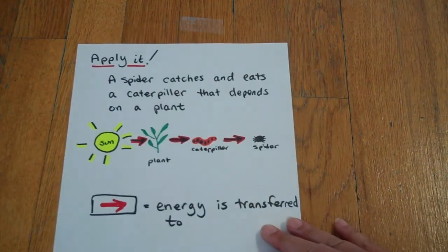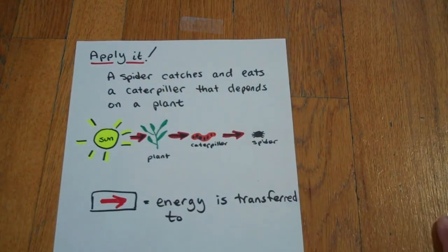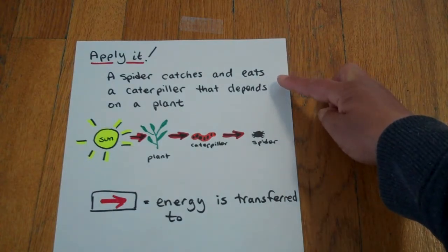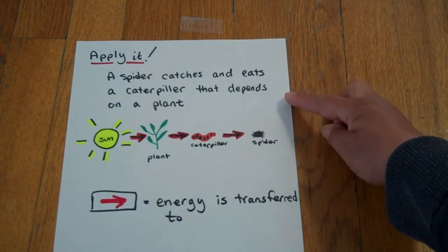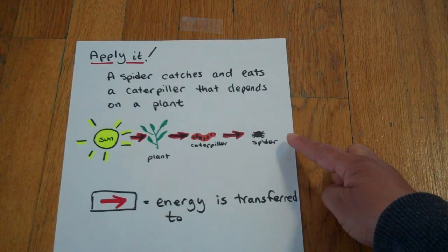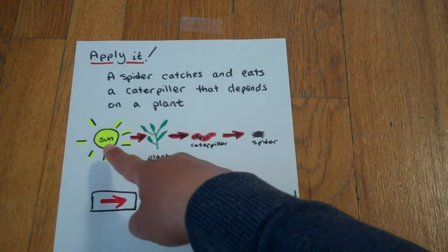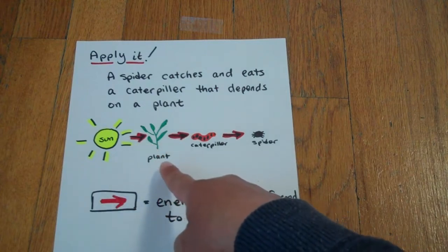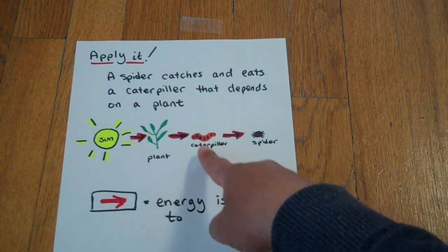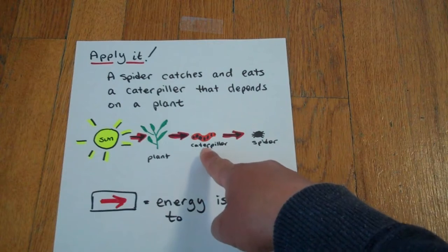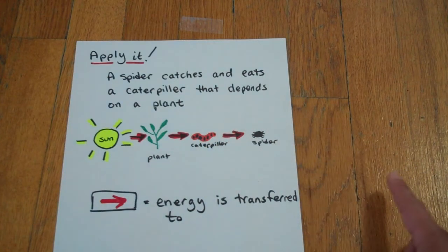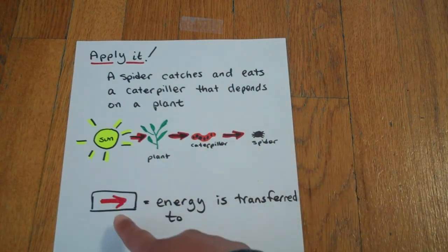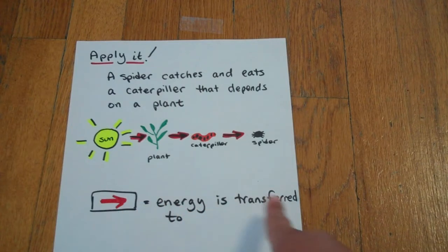Let's apply it. Here's the situation: a spider catches and eats a caterpillar that depends on a plant. Here's an example of it as a food chain. The sun transfers energy to the plant. The plant transfers energy to the caterpillar. The caterpillar is eaten and that energy is transferred to the spider. The arrow indicates where the energy is transferred to in a food chain.